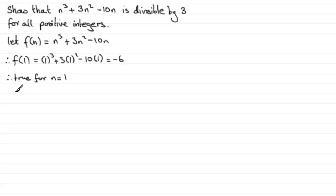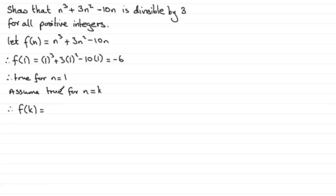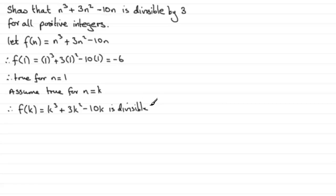We now move on to the next stage, which is to assume that this is true for some positive integer value of n — say n equals k. If that's the case, then f of k equals k cubed plus 3k squared minus 10k, and we are assuming that expression is divisible by 3.